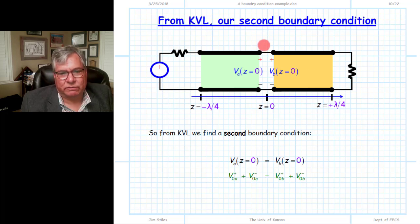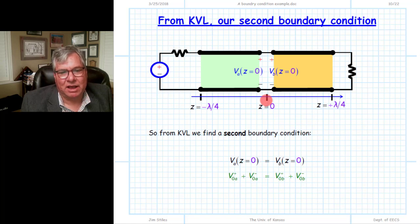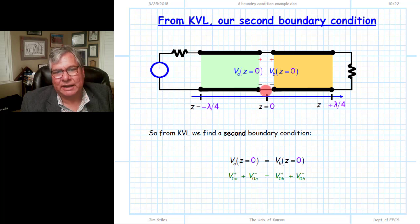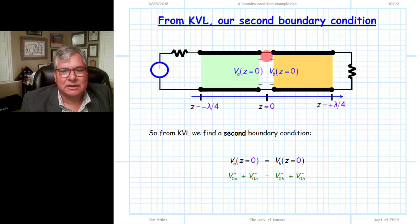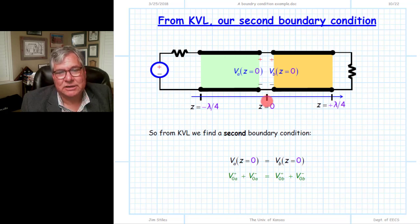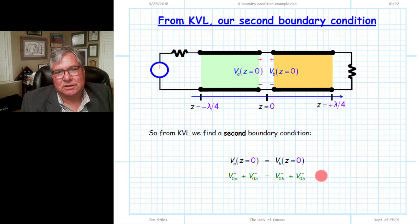Having evaluated the total current and total voltage at each end at z equals 0, we can now apply our boundary conditions. By KVL, the voltage at the end of the first line must equal the voltage at the beginning of the second. These connecting wires are arbitrarily short and have no significant inductance or capacitance, so effectively these two voltages describe the voltage at the same location, z equals 0. This gives us a relationship between the unknown wave amplitudes of each transmission line.